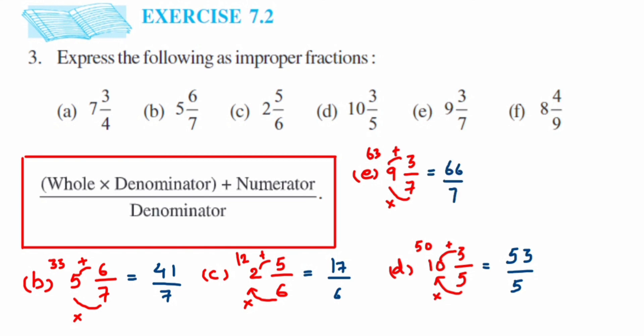Now we have the last question, f, which is 8 4/9. First multiply 9 into 8, which is 72. Now 72 plus 4 is 76. So this is equal to 76/9. That's why it's very simple: first you just multiply, whatever answer you got, add with the numerator, and denominator will remain the same.